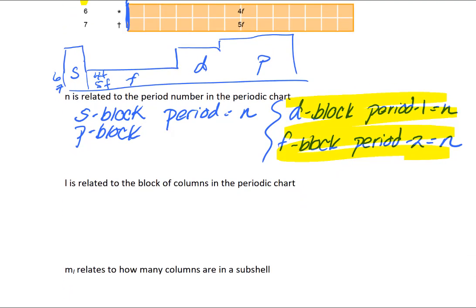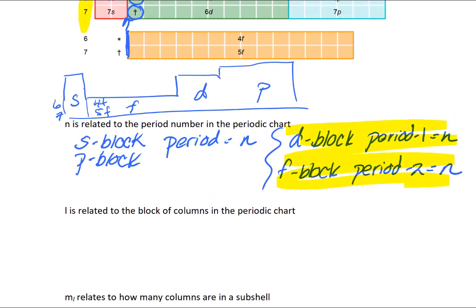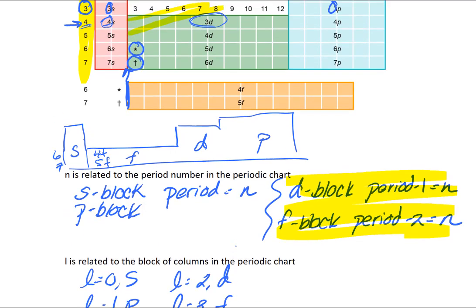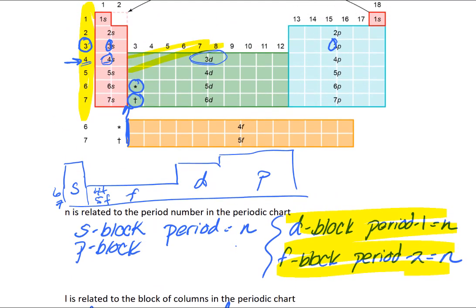When we look at L, L is related to your blocks on the periodic table. What I mean by that is remember if L is zero, that's your S block. If L is one, that's your P block. If L is two, that's your D block. If L is three, that's your F block. And on the periodic table, we have those sections blocked off or marked off in these highlighted different colors.